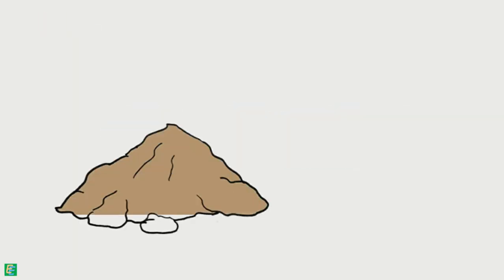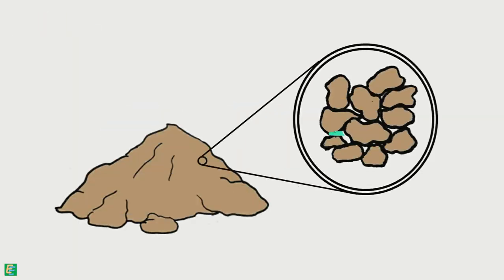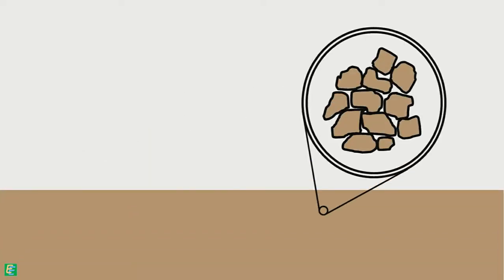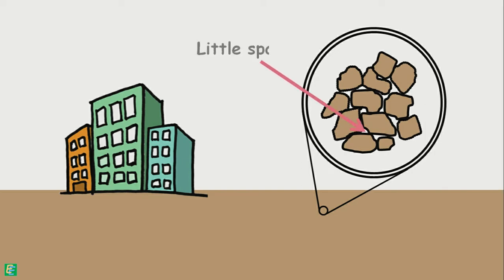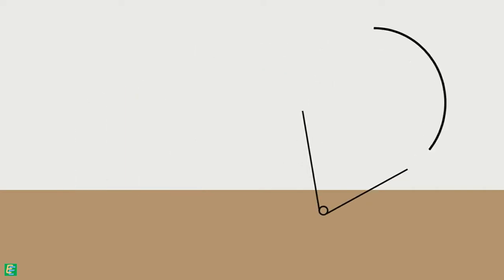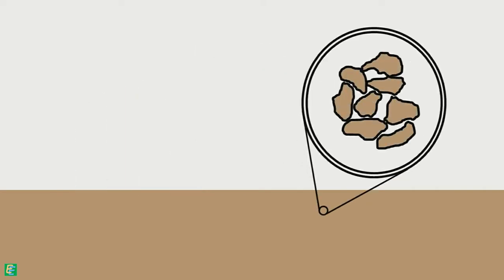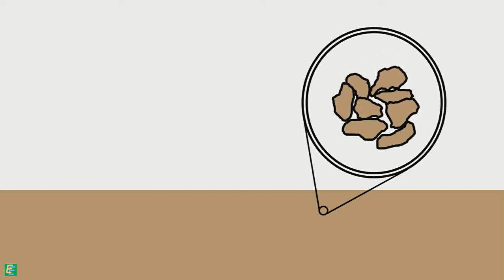A soil in its dense state has very little air voids present in it. If a soil in such a dense state is applied with heavy structural loads, it can take them with very little settlement, as there is very little space available for the soil particles to settle into. But if the same soil is in a loose state, there is plenty of space available for the particles to move and settle down.